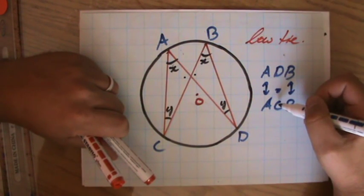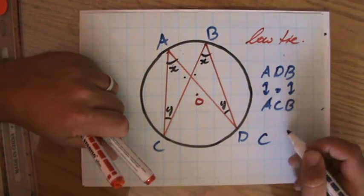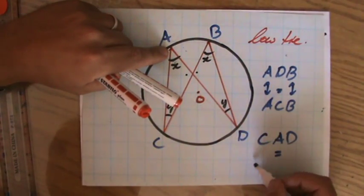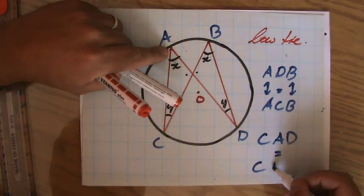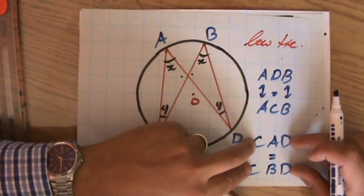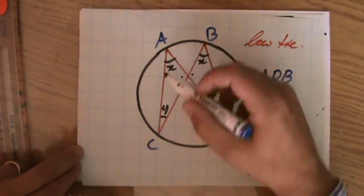I can also say that CAD is the same as CBD because the first letters are the same and the last letters are the same, so the angles there in the middle at A and B are equal. But I already saw that, I already knew that—why? Because of that first circle theorem property, angles at the center of the circle.